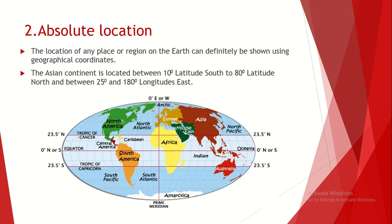Look at the map — there you can see some latitudes and longitudes. Using an atlas book, you can identify the absolute location of the continent of Asia.